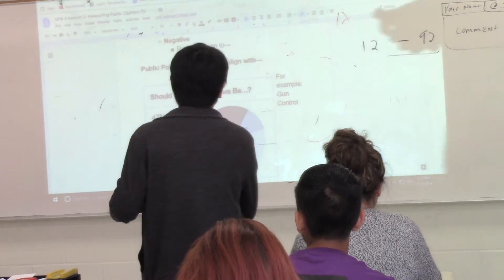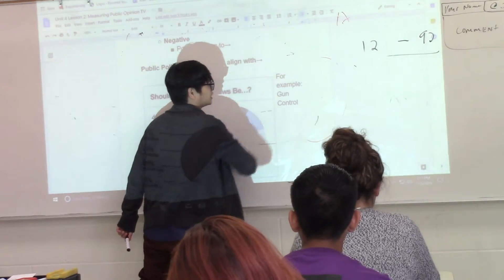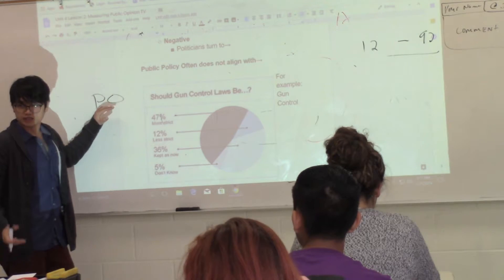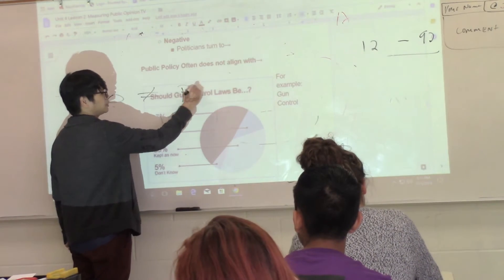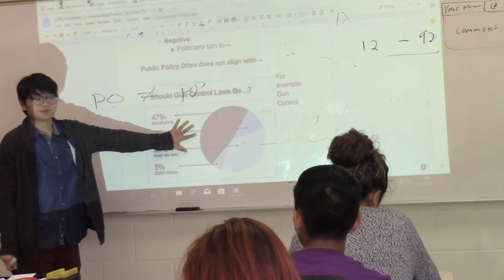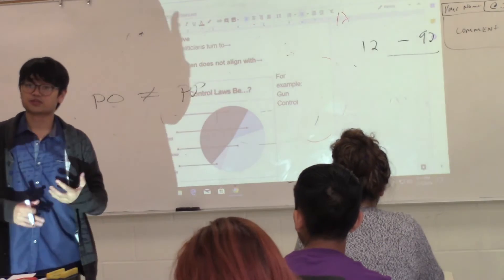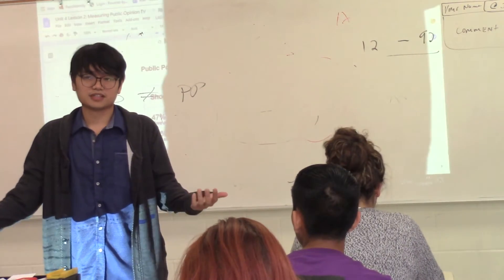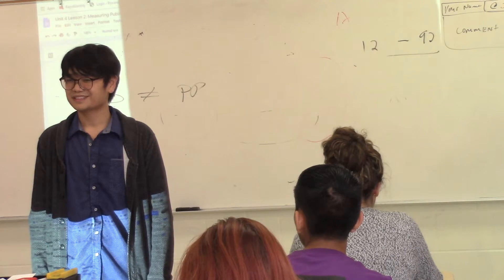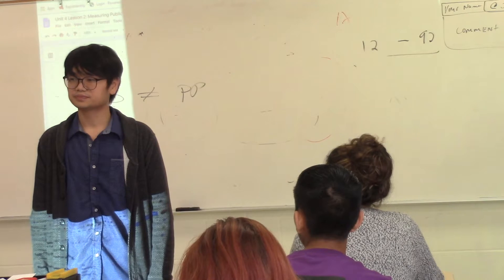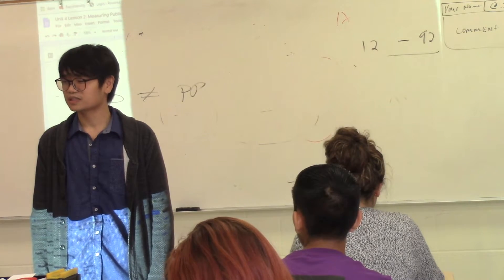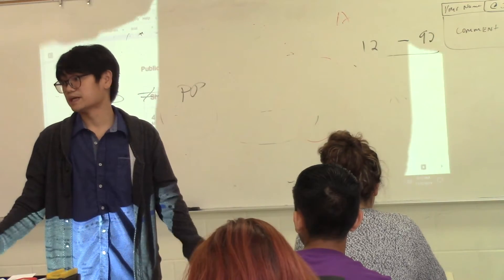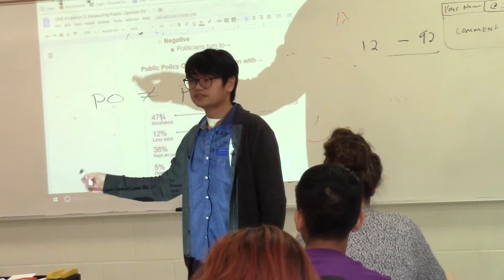Public policy often does not align with public opinion. What this country wants does not always translate into public policy. For example, when it comes to gun control, the majority of Americans want stricter gun laws — but how many gun laws have we passed recently? Actually, I think it's zero. Sandy Hook came, the Orlando shooting came, many other shootings happened — the U.S. government has done nothing about it. Sometimes what the people want — public opinion — does not become public policy.